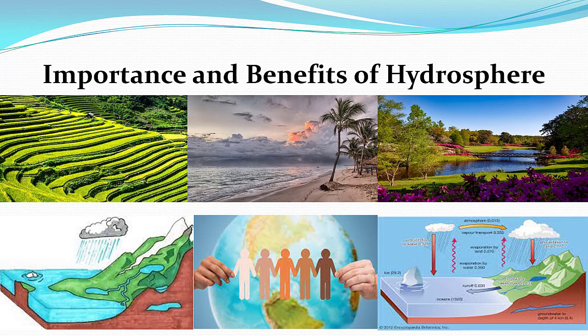Now we will discuss the importance and benefits of hydrosphere. It is the home for many plants and animals. It helps to regulate the temperature of the environment. It plays an important role in the existence of the atmosphere in its present form. Human beings get fish from hydrosphere.